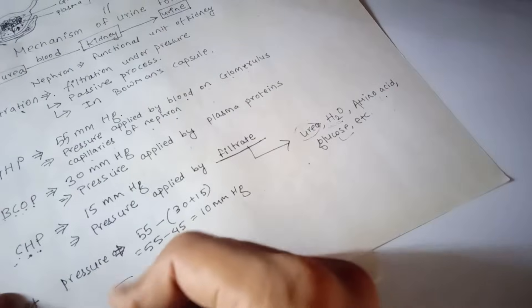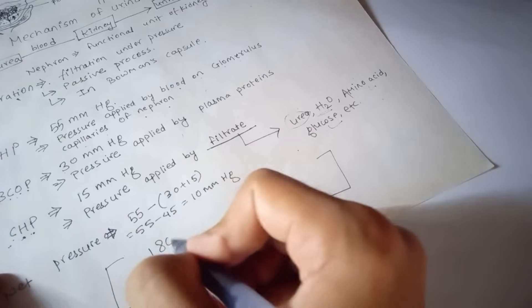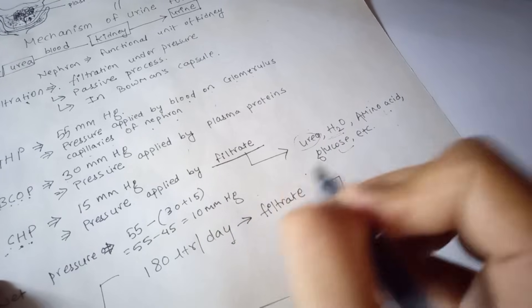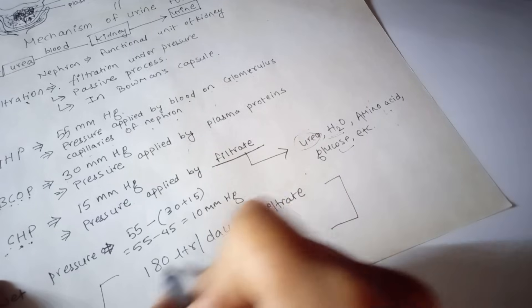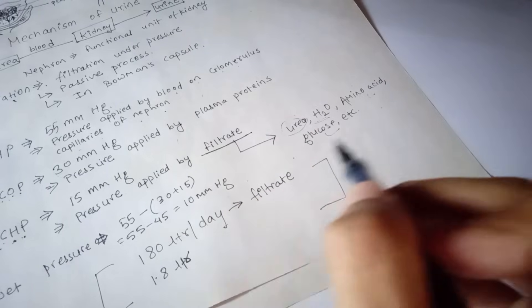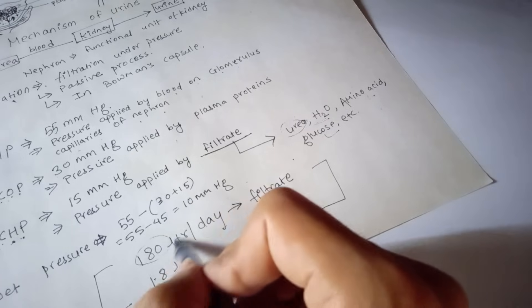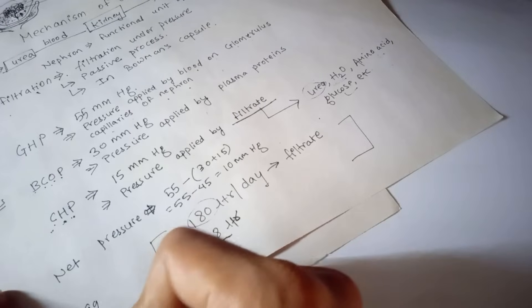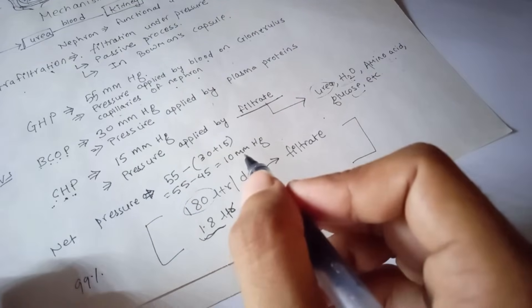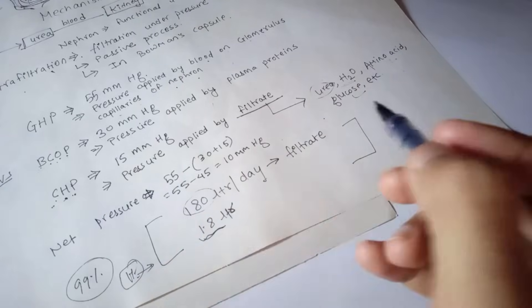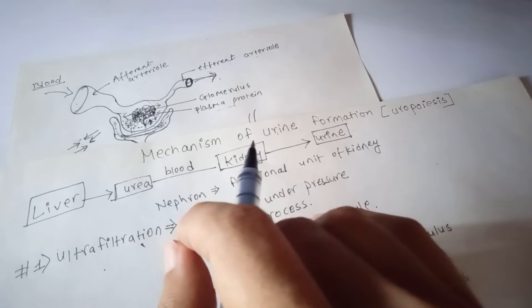The next step is selective reabsorption. An important key point: about 180 liters of filtrate is produced per day, but only about 1.8 liters of urine is actually released. This means that about 99% of useful substances from the filtrate are reabsorbed back into the body. This process is known as selective reabsorption.